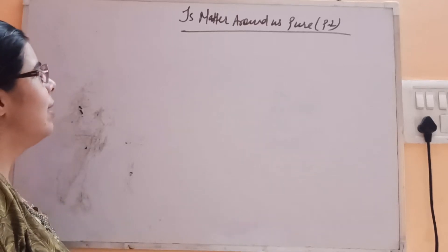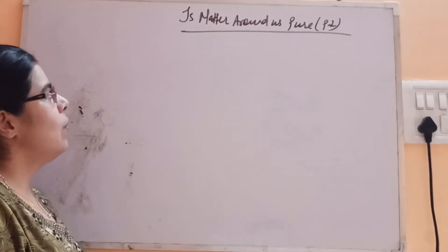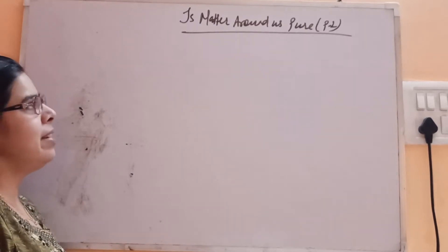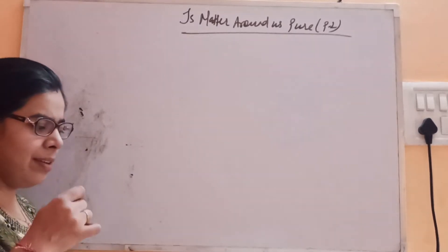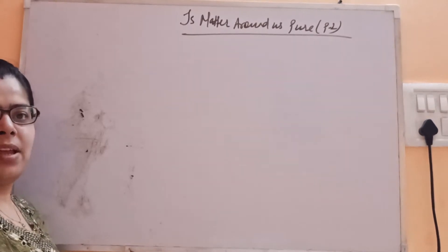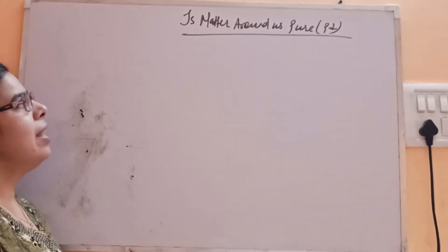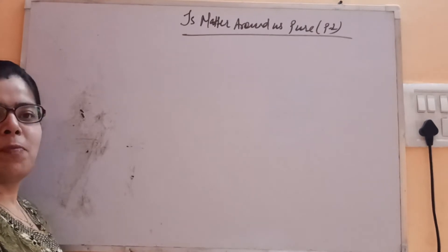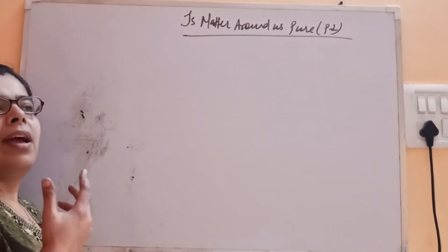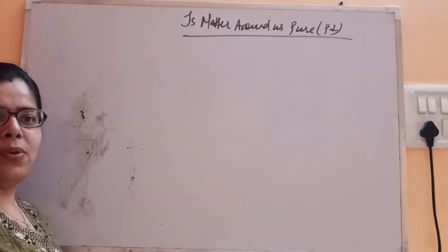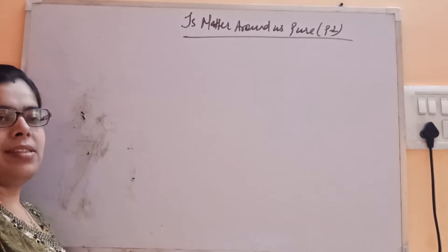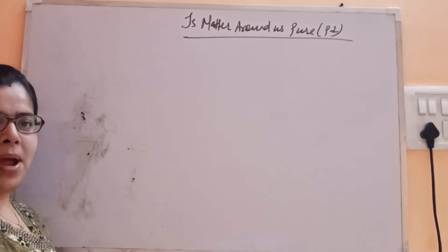Hello students, welcome back. In the previous class we started with the chapter 'Is Matter Around Us Pure?' We saw the meaning of pure according to chemists and general people, and then we saw the different types of pure substances: elements and compounds. We also covered the complete chemical classification of matter.